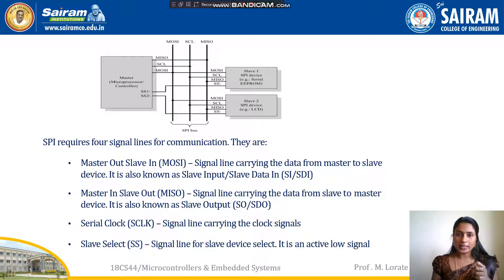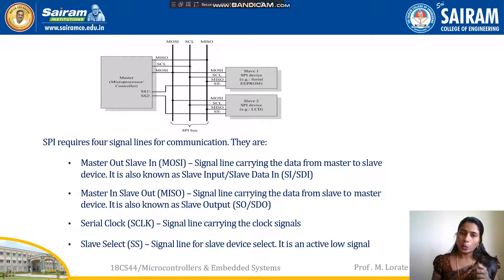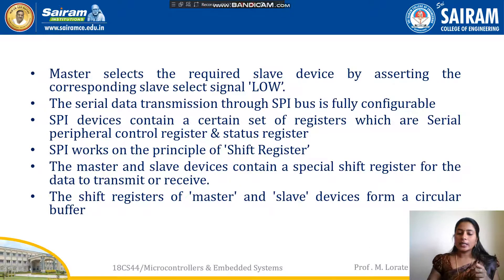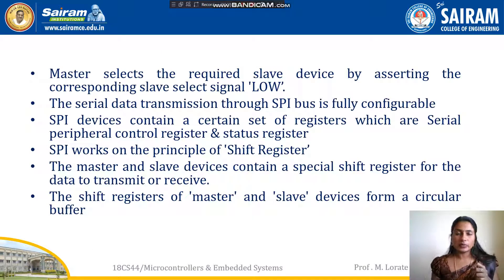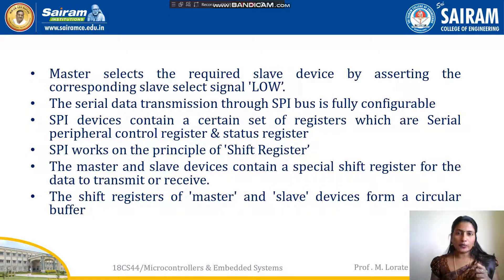MISO carries the signal from slave to master. SCL carries the clock signal. The Slave Select (SS) line is used to select the slave — it is an active low pin, meaning it must be driven low to activate the device. The master is responsible for generating the clock pulse for communication, and the master selects the slave it wants to communicate with by asserting the slave select signal low. The serial communication through SPI is fully configurable, meaning it has a set of registers to hold the configurations.